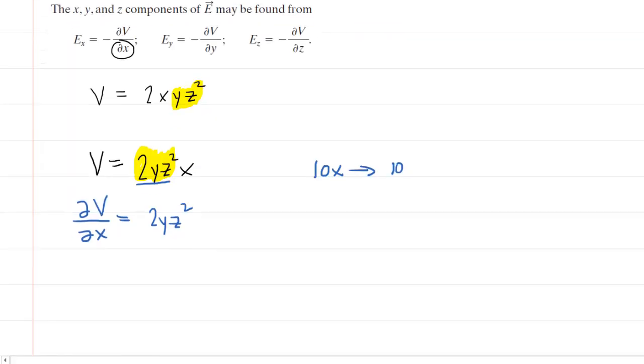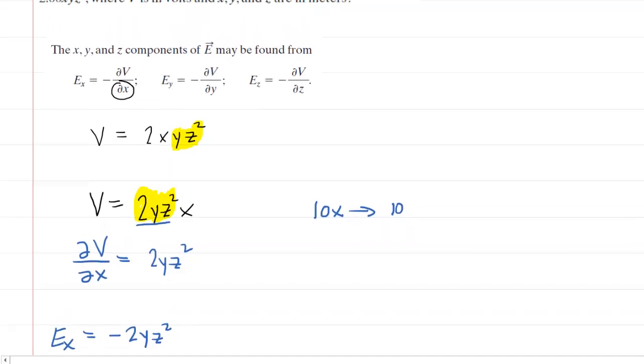Now, the electric field in the x direction is equal to the negative of the partial derivative. So we'll actually have negative 2yz squared. To continue computing the electric field as x component, we would plug in the coordinates of the point.